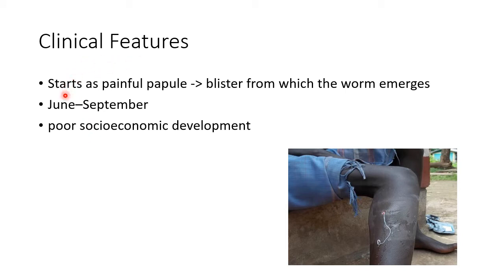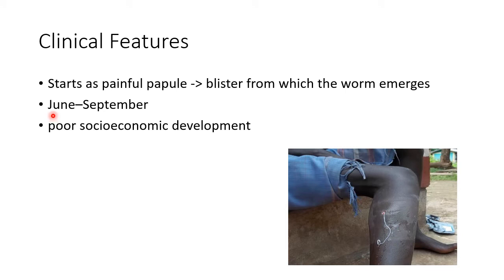Now let us see about the clinical features of dracunculiasis. It starts as a painful papule. This gets converted into a blister from which the worm emerges. This picture shows the blister from which the worm emerges in a case of dracunculiasis.